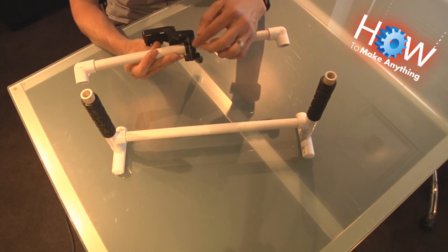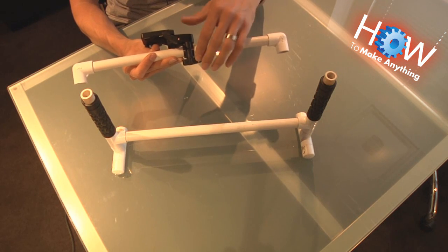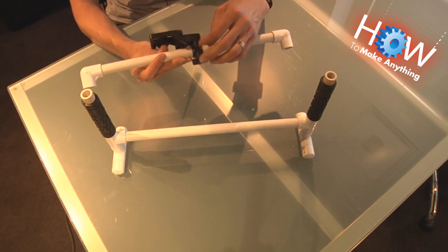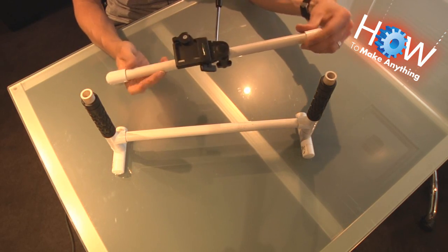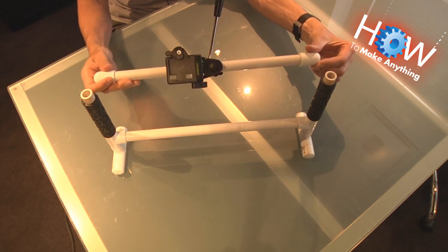Otherwise, the screw will not fit into the top because of the curvature of the PVC. Cut a groove in there. Attach the thing. Make it a little off-center. I'll show you why in a second, but that is important.